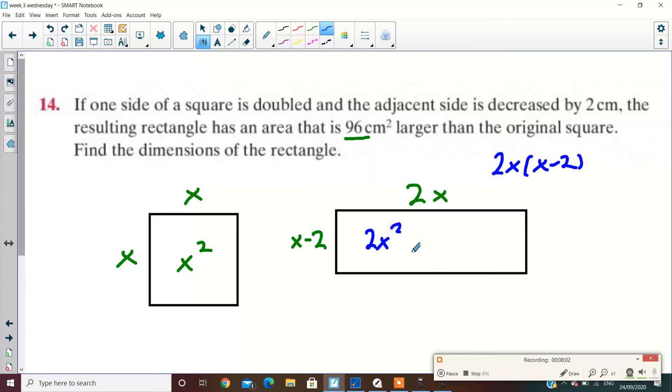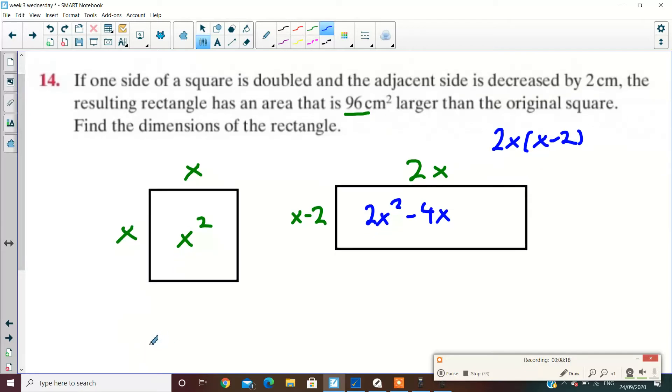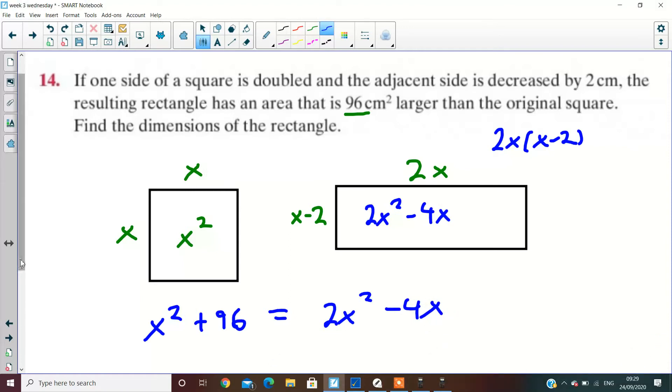Which one's bigger, the rectangle or the square? Not by eyesight, but by description of the question. The rectangle's bigger, isn't it? How much bigger is it? Yeah, so what I'd say is that the area of the square plus 96 equals the area of the rectangle. Would that make sense? Let's move it all over one side and solve it.